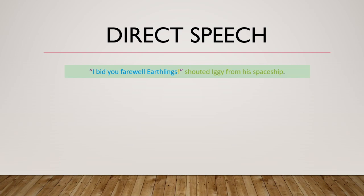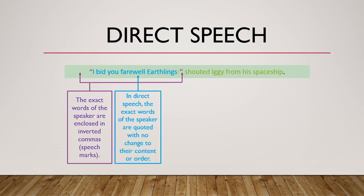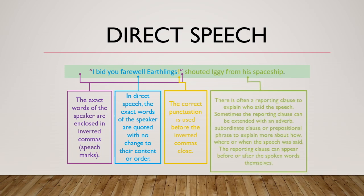Here's an example of direct speech: "I bid you farewell, Earthlings," shouted Iggy from his spaceship. You can see in purple the exact words of the speaker are enclosed in inverted commas or speech marks. In blue is the direct speech — the exact words that the speaker said or quoted — with no change to the content or order. There's also correct punctuation used before the inverted commas close; in this case, an exclamation mark. In green, there's often a reporting clause to explain who said the speech — so Iggy shouting it. Sometimes this reporting clause can be extended with adverbs, subordinate clauses, or prepositional phrases to explain how, where, or when the speech was said. This reporting clause can appear before or after the spoken words; in this case, it appears after.